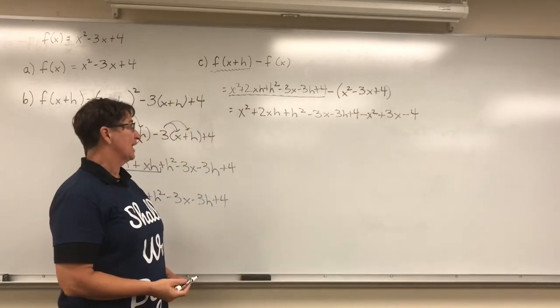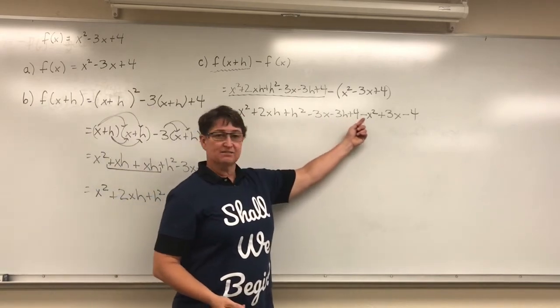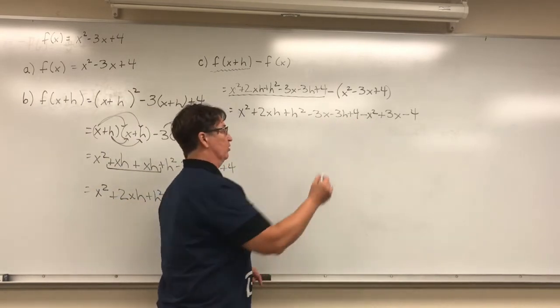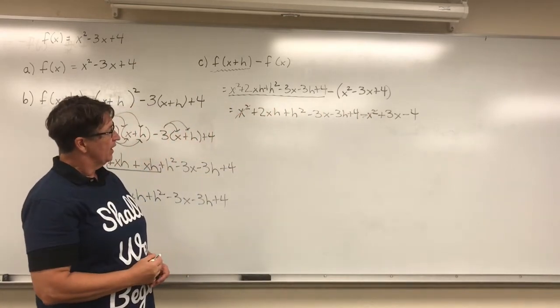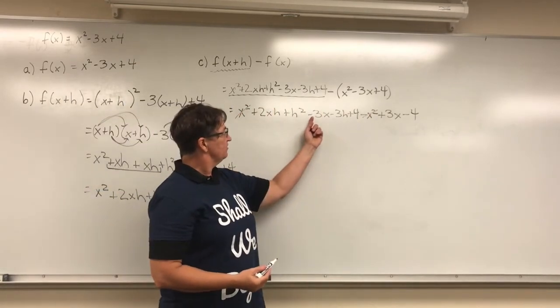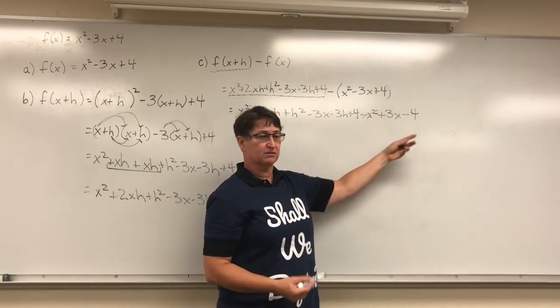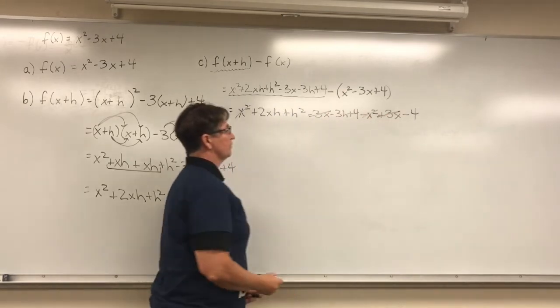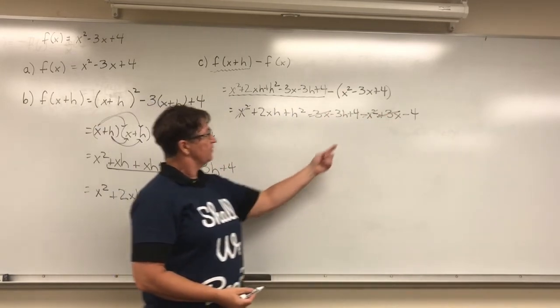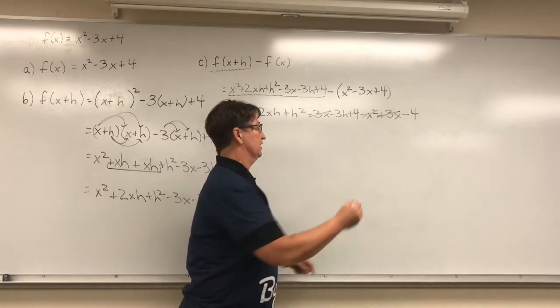Now I'm going to combine like terms. Notice this x squared minus that x squared is going to equal 0. And this negative 3x and that positive 3x, again, it's going to equal 0. And then this 4 minus that 4 is going to equal 0.